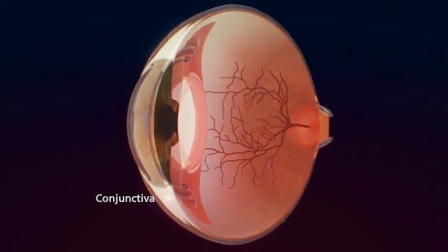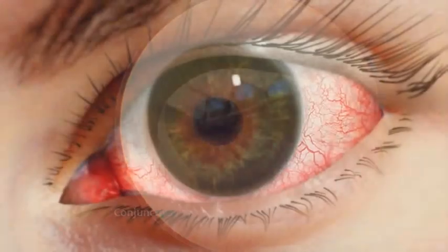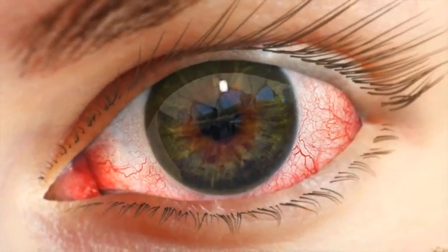The conjunctiva is a membrane that lines the white of the eye and the eyelid. Conjunctivitis occurs when this membrane becomes inflamed.